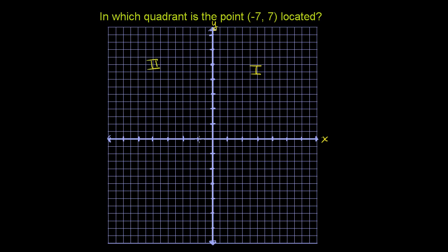Then we go down here, where both the x-values are negative and the y-values are negative. We call this the third quadrant. Once again, using Roman numerals.